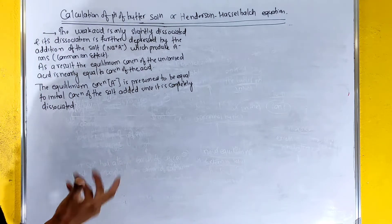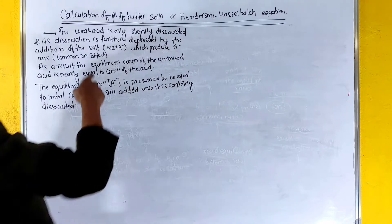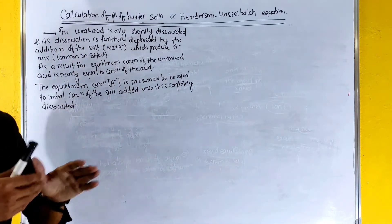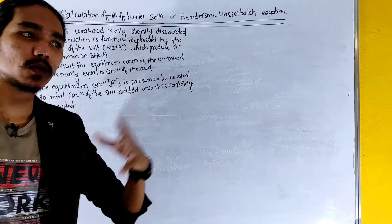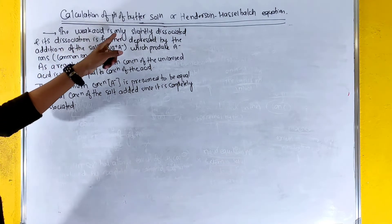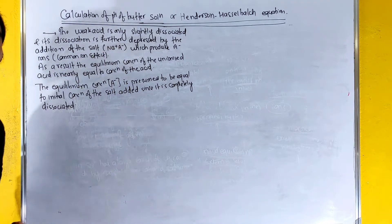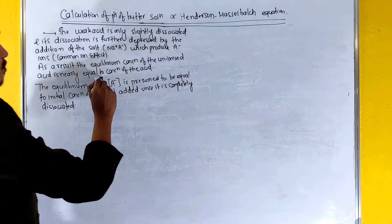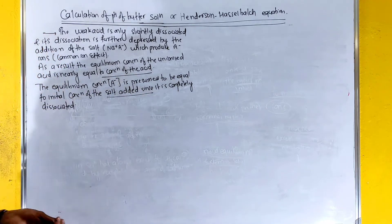The weak acid is only slightly dissociated — we have partial ionization. Its dissociation is further decreased by the addition of salt, due to the common ion effect. The equilibrium concentration of A minus is presumed to be equal to the initial concentration of salt added, since it is completely dissociated.